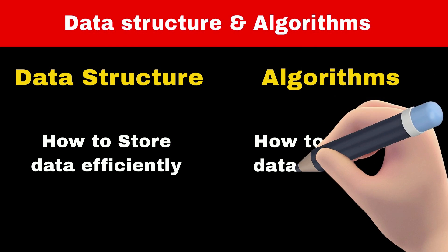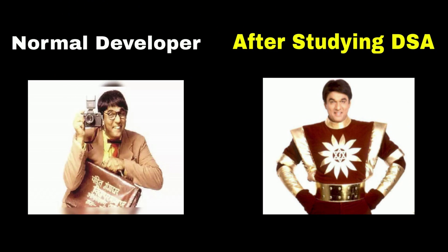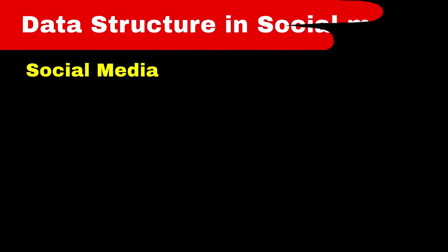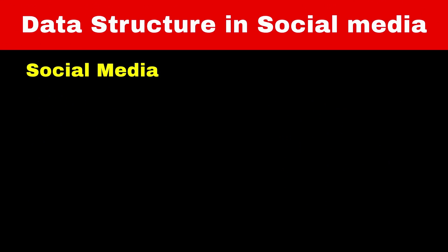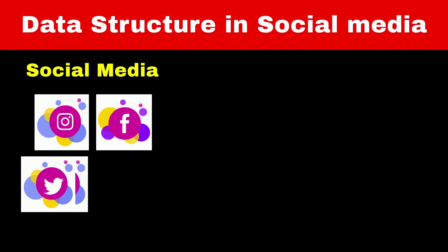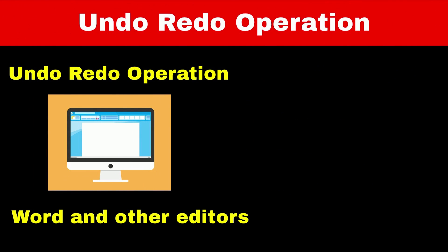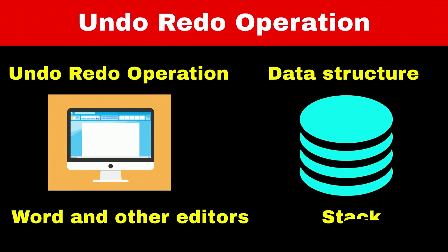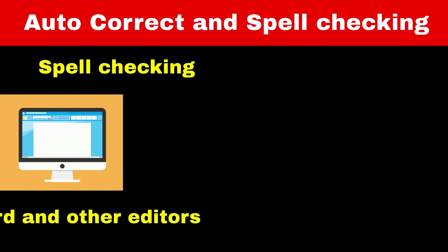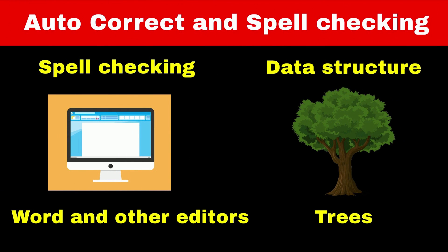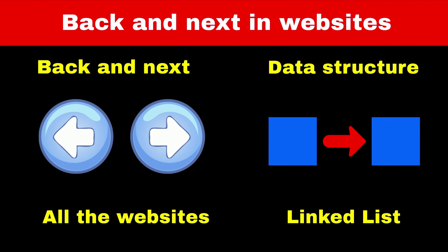Algorithm allows us to process data in a meaningful way, and learning data structures and algorithms will definitely make you a better programmer. There are some real-life examples: for implementing applications like Instagram, Facebook, and LinkedIn, a very famous data structure called Graph is used. For undo and redo operations in Microsoft Word, Stack is used. For spell-checking and autocomplete in editors, Tree data structure is used. For implementing back and forward buttons in a webpage, Linked List can be used.